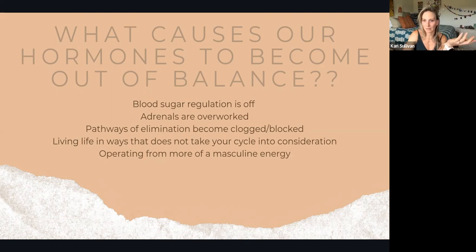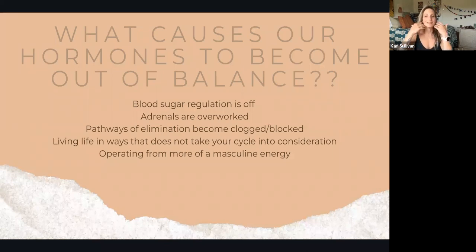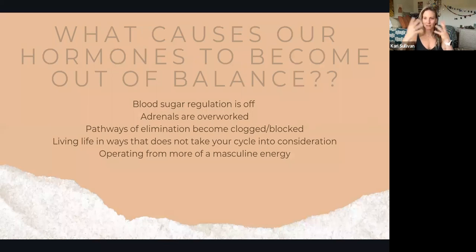What causes our hormones to become out of balance? Looking at the five-step protocol: blood sugar regulation isn't happening, adrenals are overworked, pathways of elimination become clogged. If we're seeing it on the surface of our skin, we are three systems behind — it really starts with the liver, then goes to the gut, and the skin is the last layer of elimination.